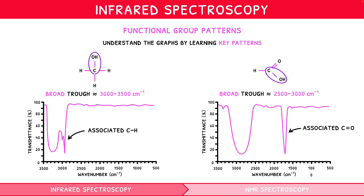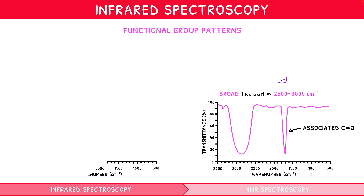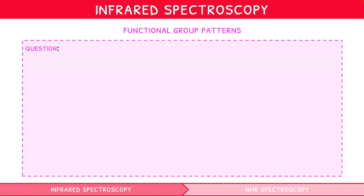Although a carboxylic acid will also contain an alkyl group, the expected trough centred around 3000 cm⁻¹ is absorbed by the large carboxylic acid O–H trough, hiding it. Let's review this content with an example question.